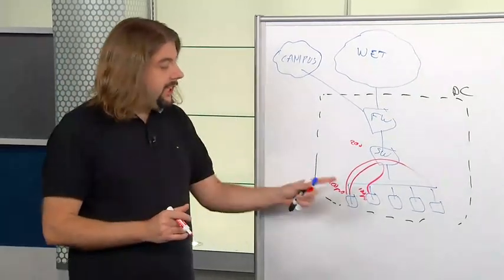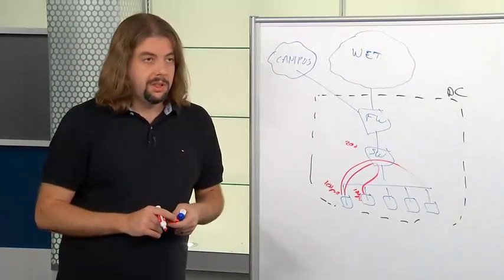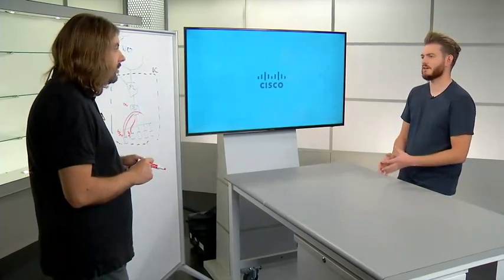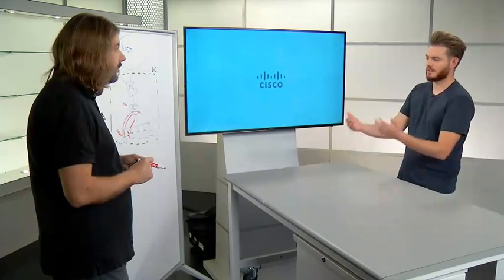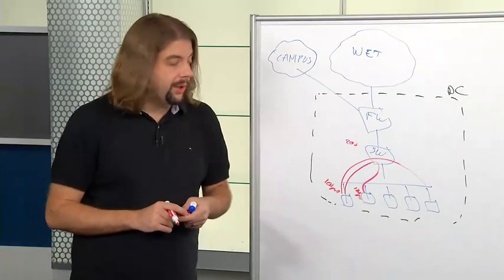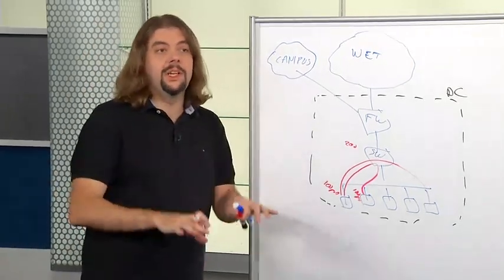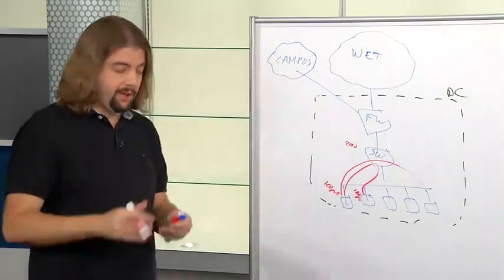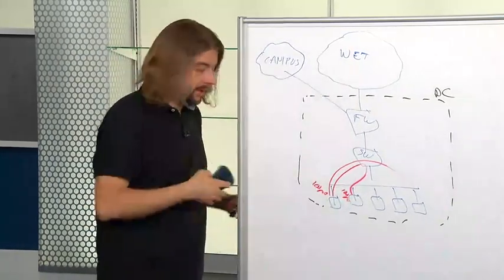For very detailed microsegmentation policies — policies that really describe the application behavior — we should optimize by enforcing as close as possible to the workload, right there on the host. That means traffic from host to host inside the data center is better enforced on the host directly, bringing those 200 switch rules down to zero on the switch.